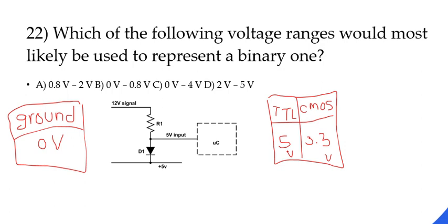So your answer would be D, 2 volt to 5 volt range, because that's 5 and 3.3 is going to be right in this, not 0 to 4 or 0 to 0.8 or 0.8 to 2 volts.